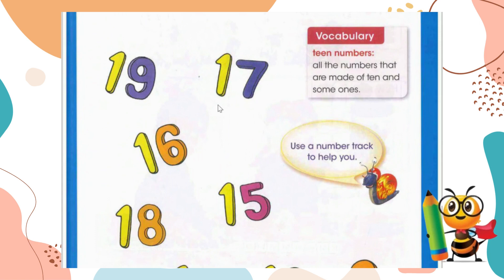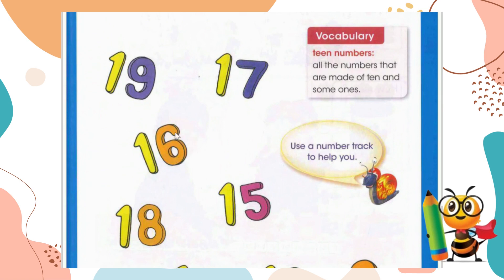All numbers made of ten and some ones are known as teen numbers. For example, nineteen is made up of the number pair 10 and 9. Seventeen is a number pair of 10 and 7. To remember teen numbers: all teen numbers will have a one first, and the next digit matches the teen number. For example, 16 is 10 and 6.